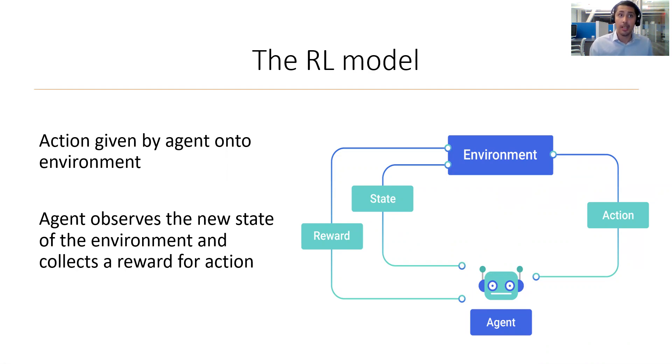After the agent chooses the action, the agent observes the new state it finds itself in and collects a reward for that action. Again, back to our example, after the robot chooses some action, the robot would observe its new state, such as how far is it from the exit. And then it will collect some reward based off the state, such as giving it a high reward if it is closer to the exit, or a lesser reward if it's further away, or even giving it a negative reward to penalize it. Therefore, the objective of the agent would then be to maximize its reward.